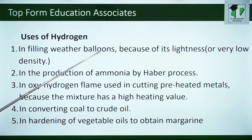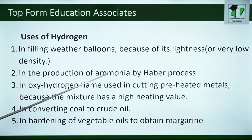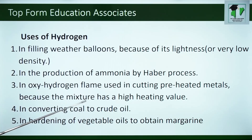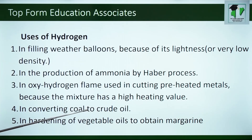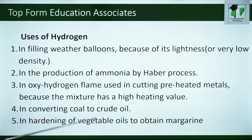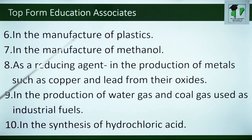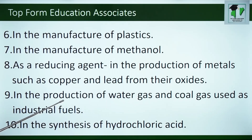Hydrogen is used in filling weather balloons because of its lightness or very low density. It can be used in the production of ammonia by the Haber process. It is also used in oxy-hydrogen flame used in cutting preheated metals because the mixture has a high heating value. It can be used to convert coal to crude oil. It can be used in hardening of vegetable oils to obtain margarine or butter. It can be used in the manufacture of plastics, the manufacture of methanol, as a reducing agent in the production of metals such as copper and lead from their oxides, in the production of water gas and coal gas used as industrial fuels, and lastly in the synthesis of hydrochloric acid.